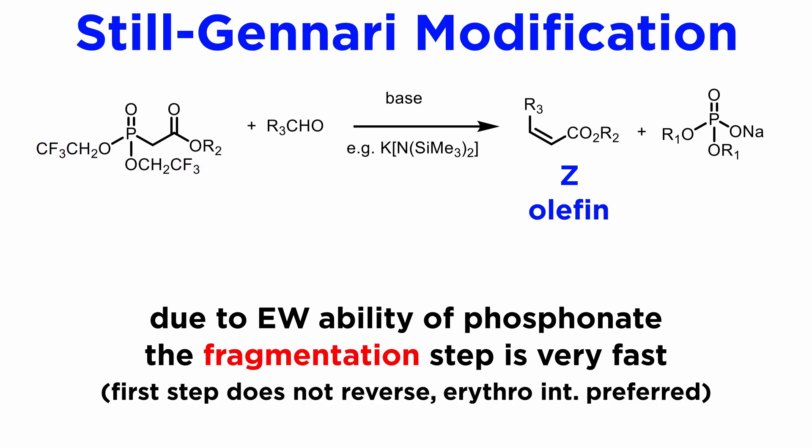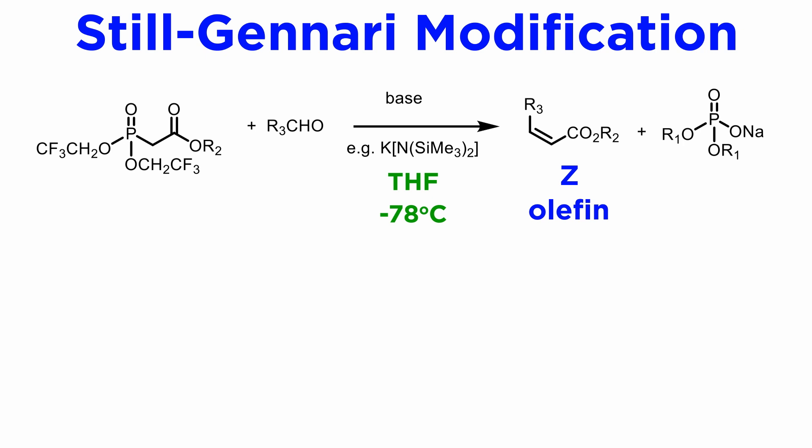The fast fragmentation results in the first step not having time to reverse. This means that in this particular case, the selectivity is decided in the first step — the addition of the carbanion to the carbonyl group — and that the erythro intermediate is favored over the threo by a fairly large margin. The Still-Gennari olefination is usually performed in THF at low temperatures, typically −78°C, which further enhances kinetic control.